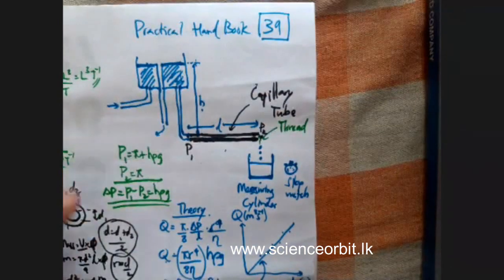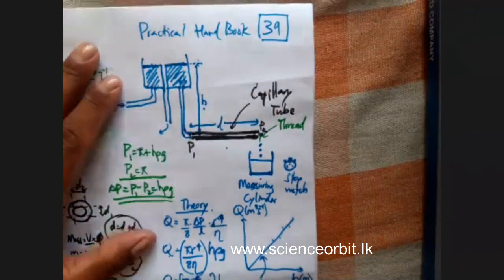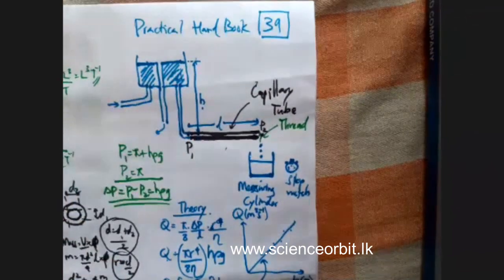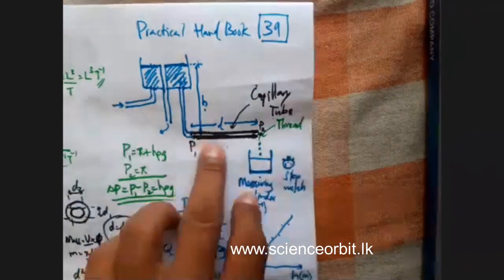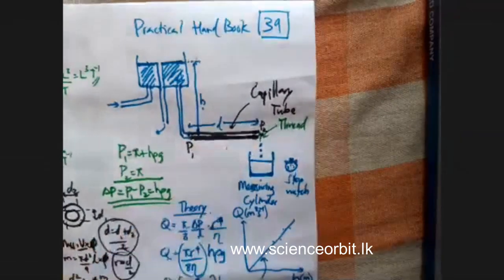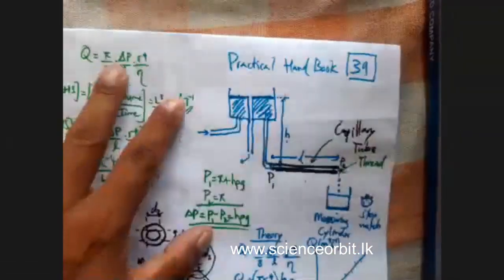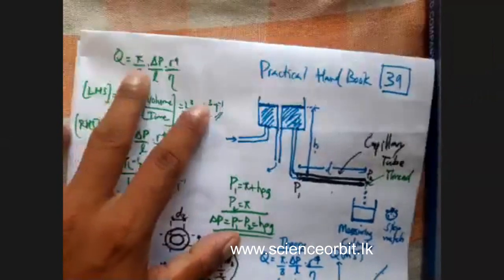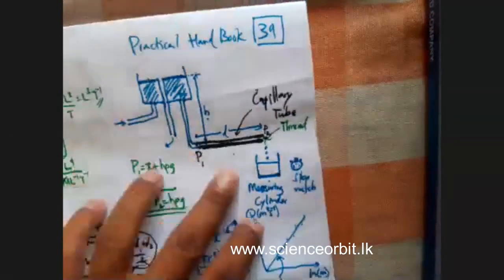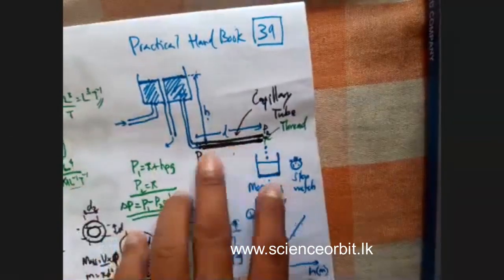The conditions have to be satisfied in the discussion part. The conditions which are satisfied: you have to use a capillary tube — why? It is a condition for Poiseuille's Hagen equation to be true. Next, the tube has to be horizontal.